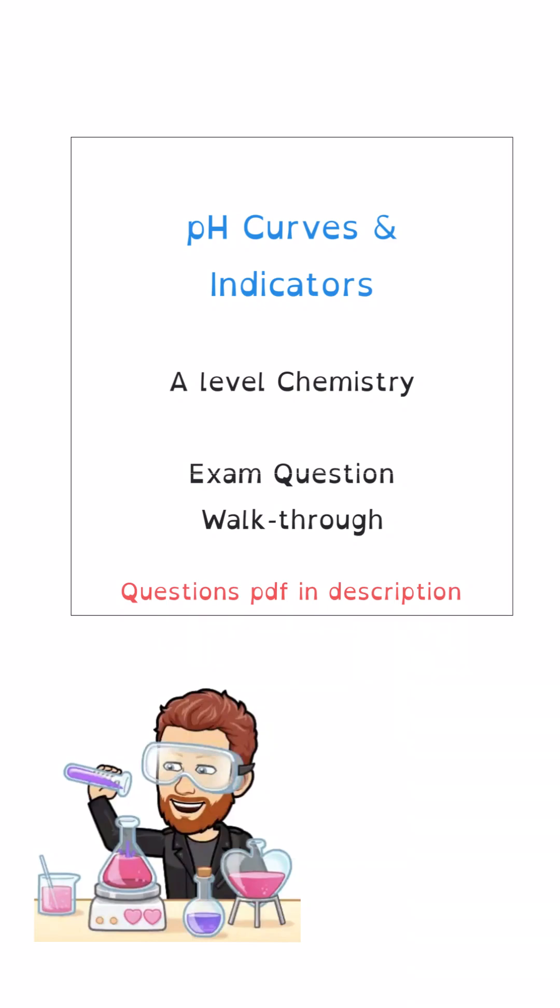Hello everybody, welcome back to the channel. I'm here with another A-level chemistry exam question walkthrough. This time I'm going to be looking at pH curves and indicators. As I work through the question, I will write down my thoughts about the background for the question in blue and the answers that are going to get you the actual marks will be in green. If you want to download the questions as a pdf, that's in the description. Otherwise, let's head on in.